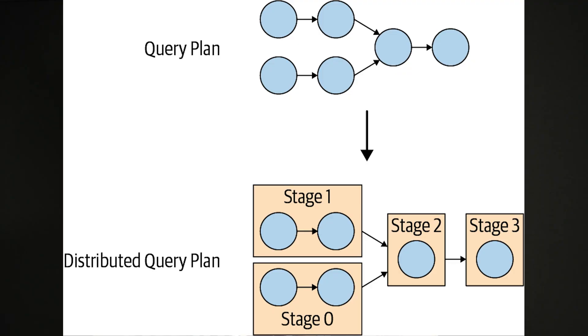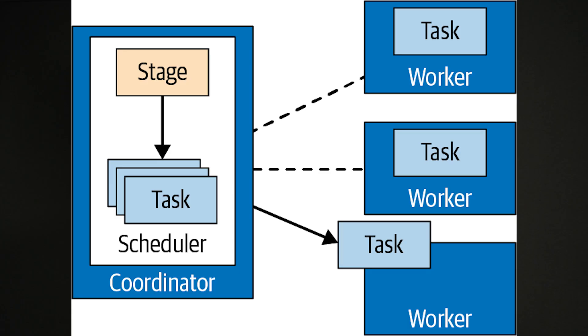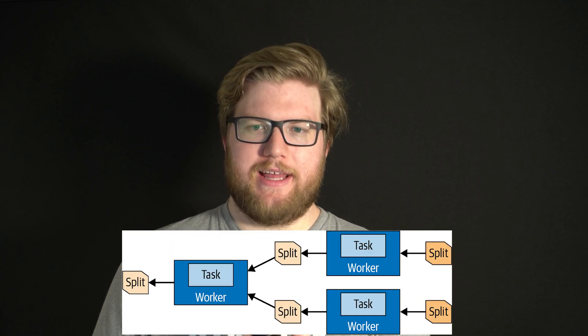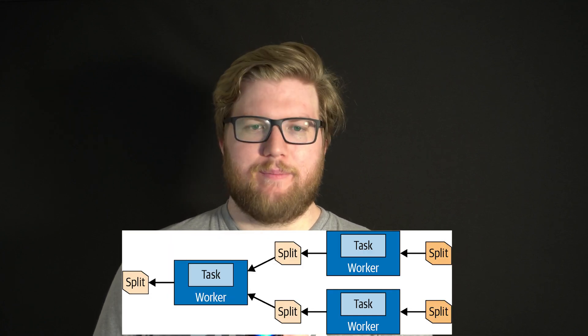A distributed query plan is broken down into stages, which represent the high-level steps necessary to complete the query. Stages are then broken down by the coordinator into smaller tasks, and those tasks are scheduled across the worker nodes in the Trino cluster. A query can be broken down into many tasks, with each task processing a small piece of data. As the worker nodes are assigned tasks, they break them down further into units of work called splits, allowing for parallel processing.